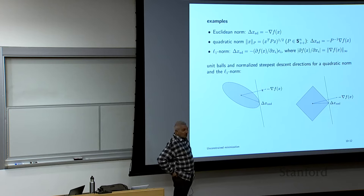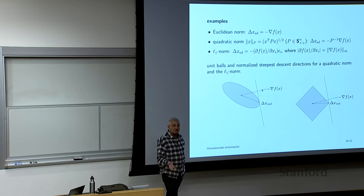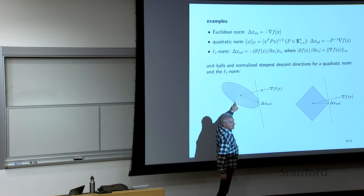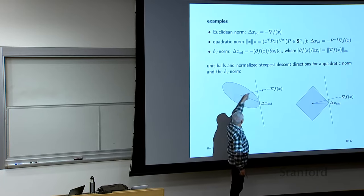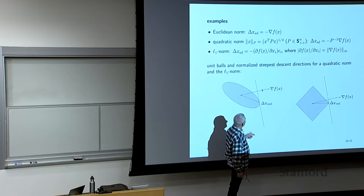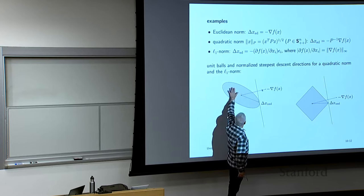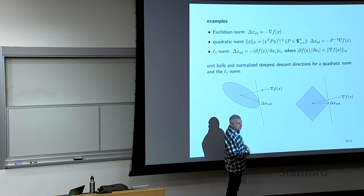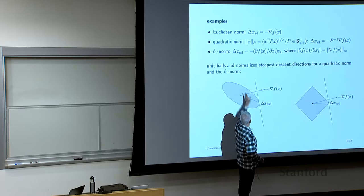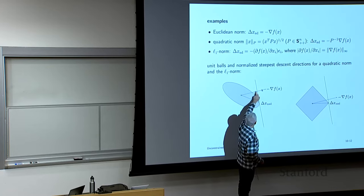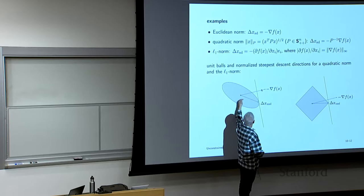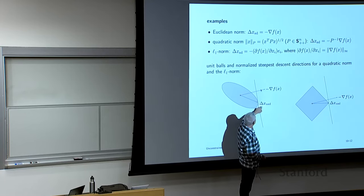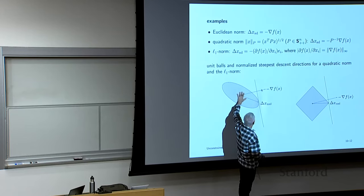If you use a quadratic norm — that's a quadratic form with a positive definite matrix, take the square root — the unit ball is an ellipsoid. You minimize the inner product of a point in this set with the gradient, which means maximizing the inner product with the negative gradient. You go as far as you can in that direction and end up at a point. This is the steepest descent direction in the norm whose unit ball is that ellipsoid. It changes the direction but never rotates it more than 90 degrees.